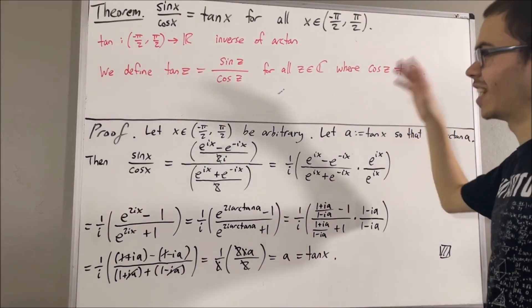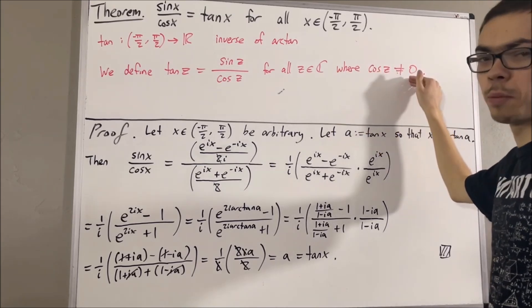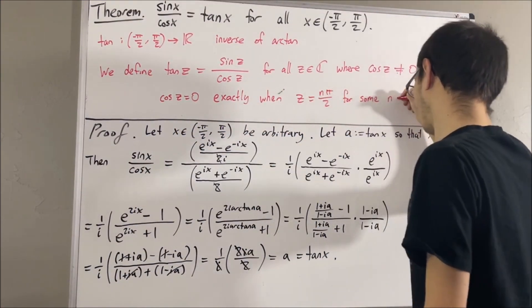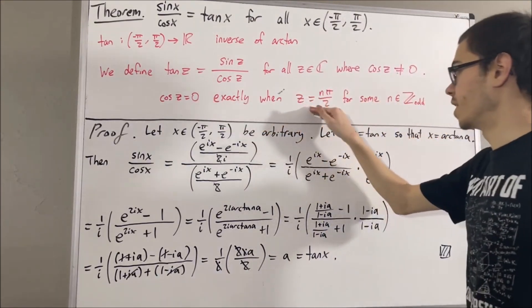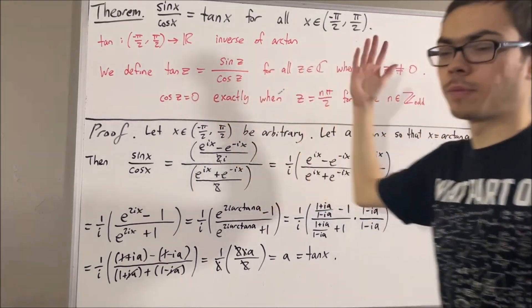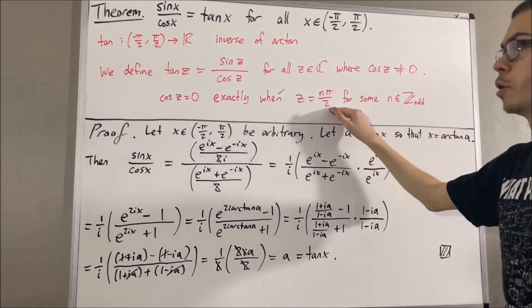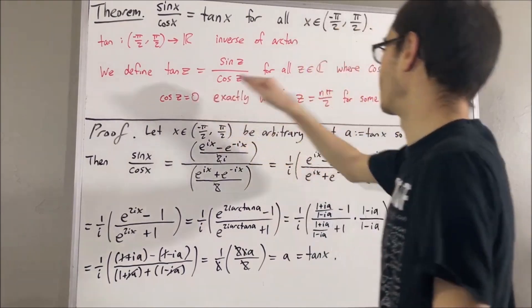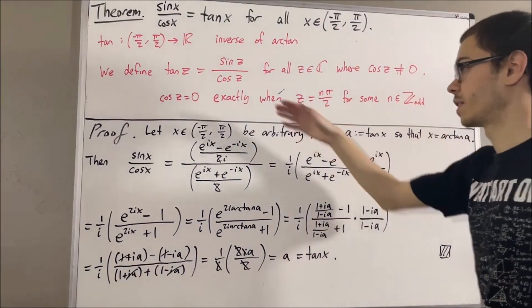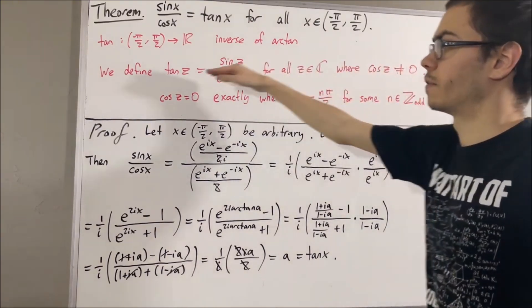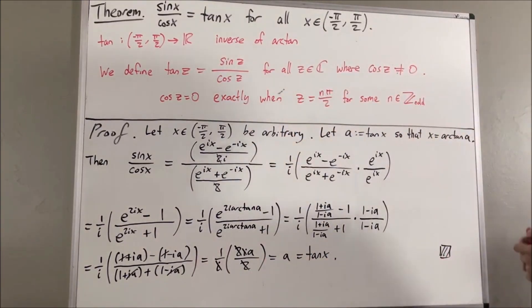You might be wondering exactly which complex numbers satisfy this property. It turns out cosine of z is equal to 0 exactly when z equals n pi over 2 for some odd integer n. The converse is easy to see, but the forward direction requires proof. So cosine of z is not equal to 0 exactly when z is not of this form, and that determines the domain of this new tangent function. And that's pretty much all for this video.